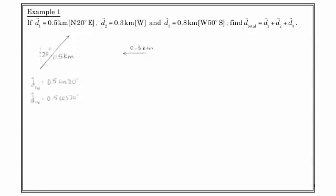Here we have 0.3 kilometers west, which actually doesn't need any resolving. So the horizontal component, which is the vector, is negative 0.3. The reason it's negative is because the sign convention that we're used to dealing with has north as positive and east as positive. West and south, then, are negative.